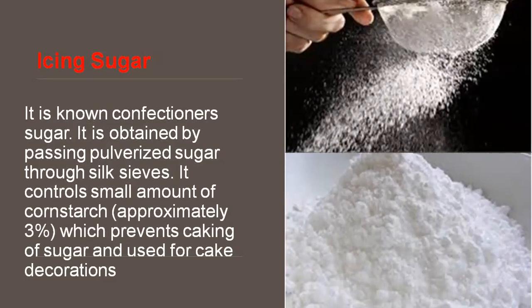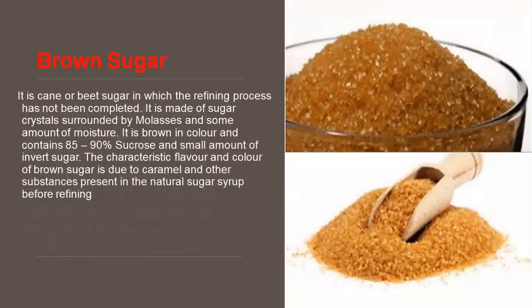Next is icing sugar, also known as confectioner's sugar. It is obtained by passing pulverized sugar through silk sieves. It contains a small amount of cornstarch, approximately three percent, which prevents caking of the sugar and is used for cake decoration. Next is brown sugar. As you can see from the color, it is a cane or beet sugar in which the refining process has not been completed. It is made up of sugar crystals surrounded by molasses and some amount of moisture. It is brown in color and contains 85 to 90 percent sucrose and a small amount of invert sugar. The characteristic flavor and color of brown sugar is due to caramel and other substances present in the natural sugar syrup before refining.